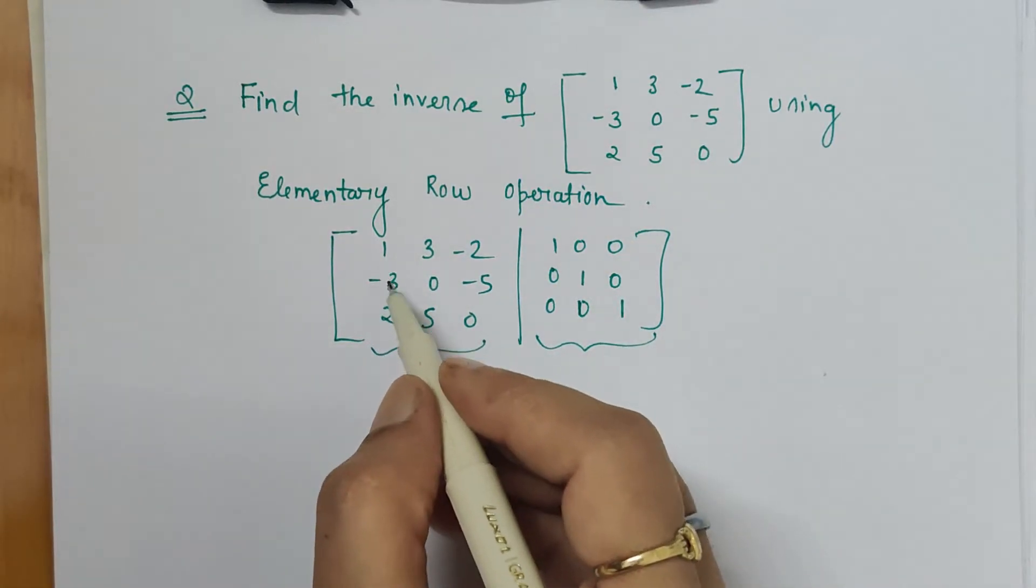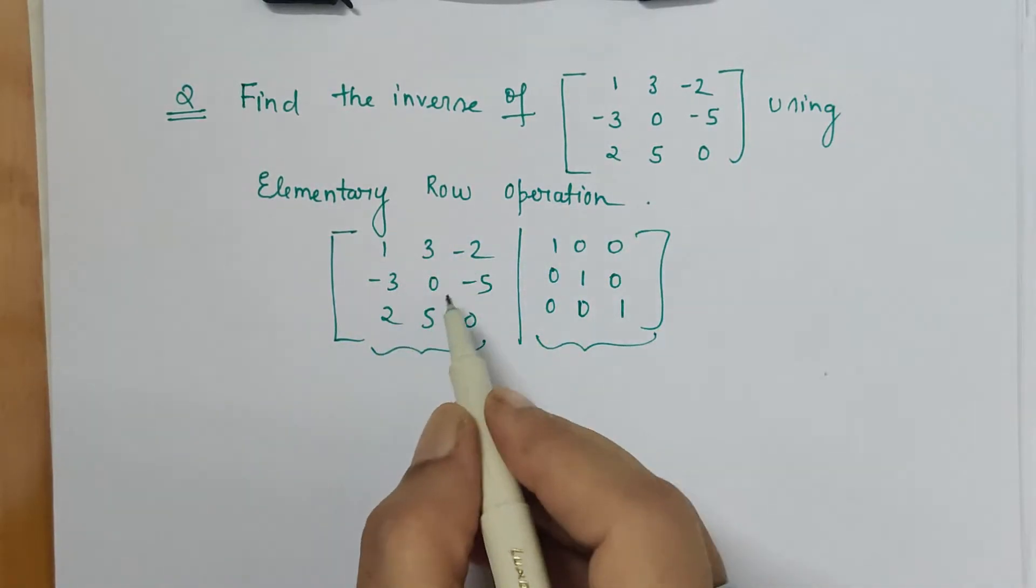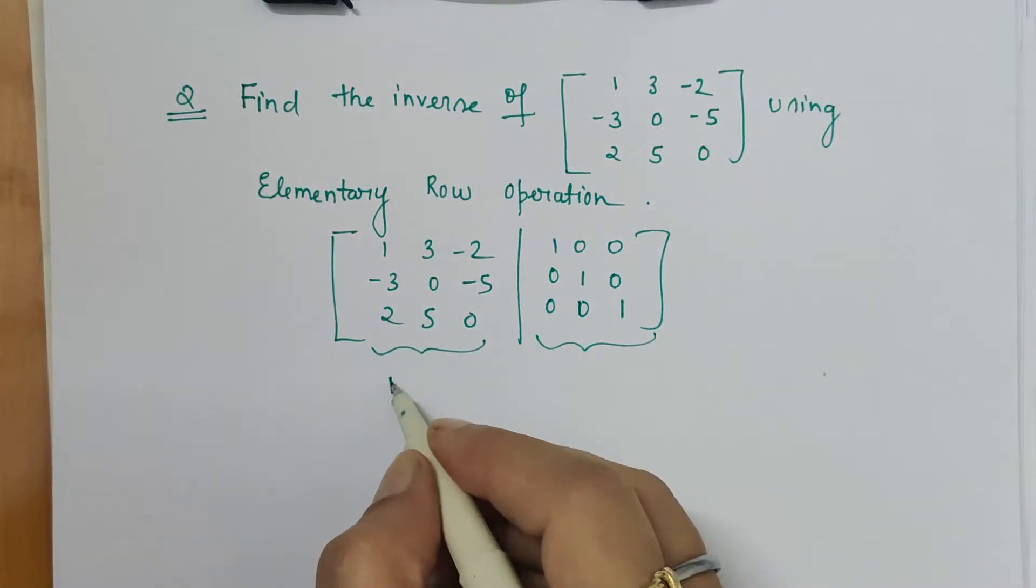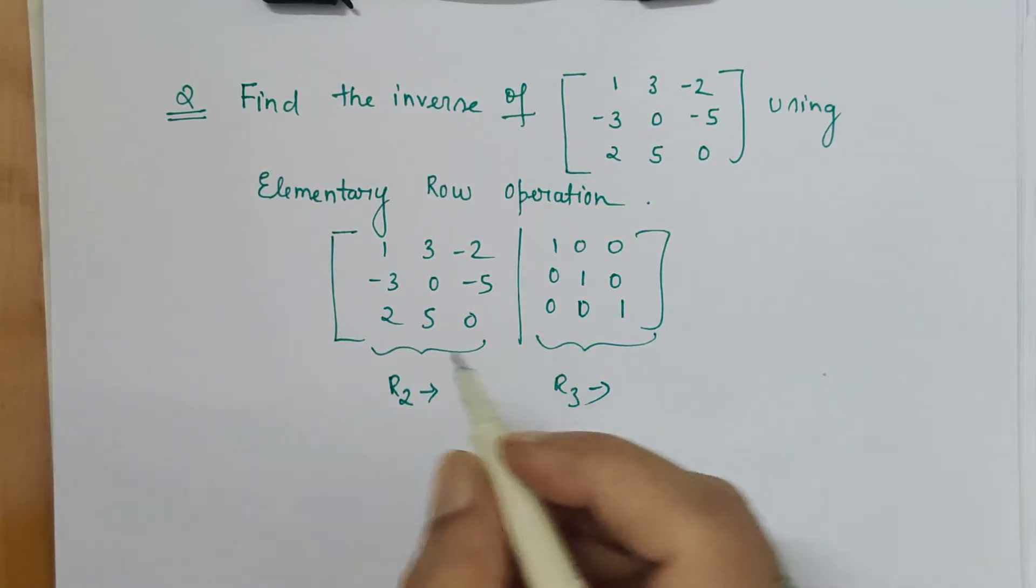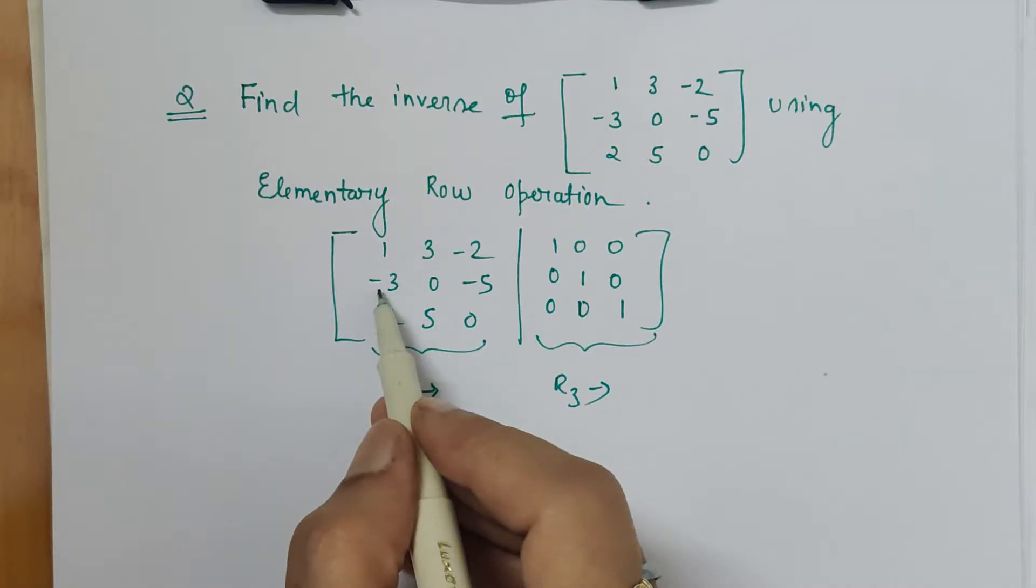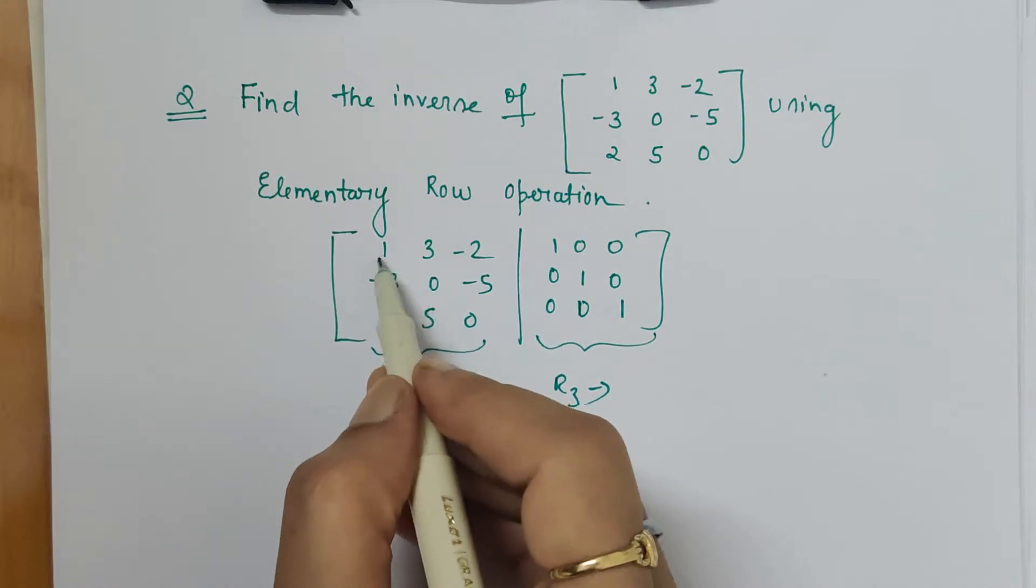Let's start doing it. We know that keeping any one row constant, we can make changes in the other two rows. Here I am making changes in the second row and third row. How we can make this as 0? By adding minus 3 with plus 3.